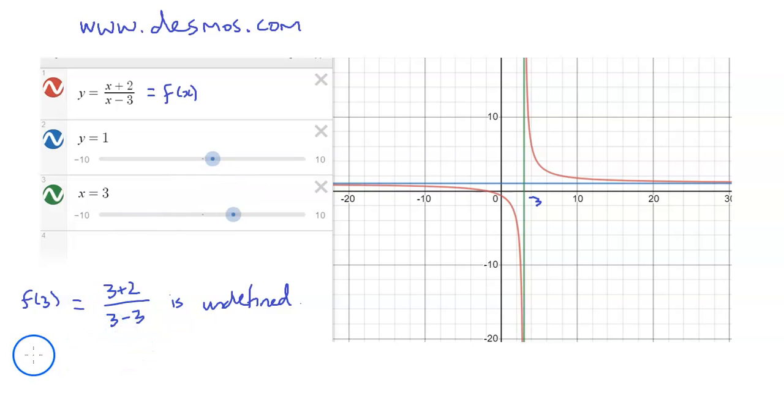However, as x gets closer and closer to 3, if we say f(x) equals p(x) divided by q(x), then we can see that p(x) gets closer and closer towards 5, and q(x) gets closer and closer towards 0. And so since the bottom part is getting closer and closer towards 0, that means we're dividing by a smaller and smaller number in terms of absolute value.